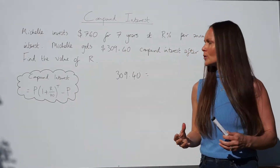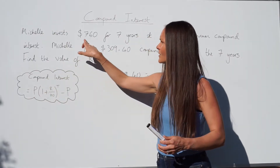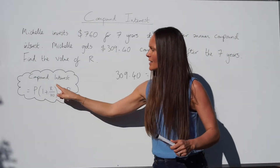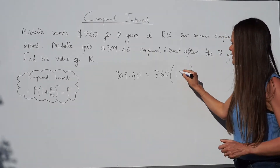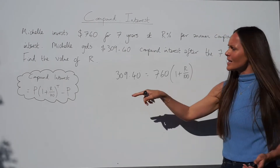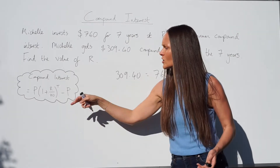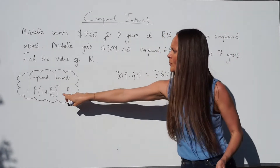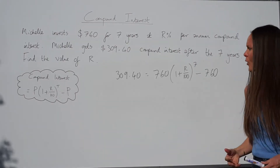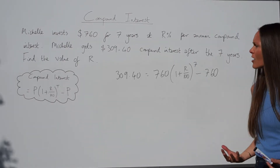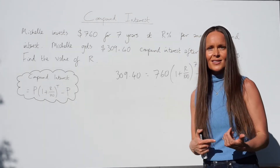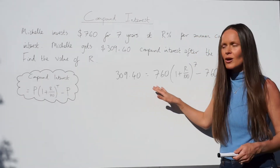The compound interest is $309.40. This equals P, the starting amount of $760, multiplied by (1 + r/100) — r is what we're trying to find — raised to the power of 7 for the seven years, then minus $760 to subtract the principal. We now need to solve this equation to find r. If you need practice on solving equations I have other lessons that you might find useful before attempting this.